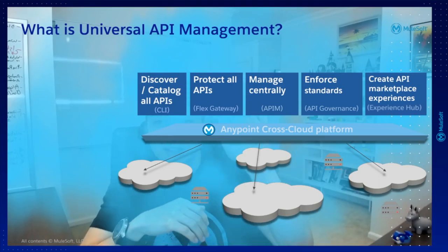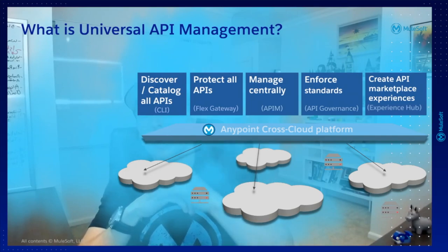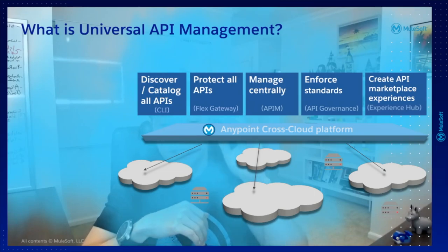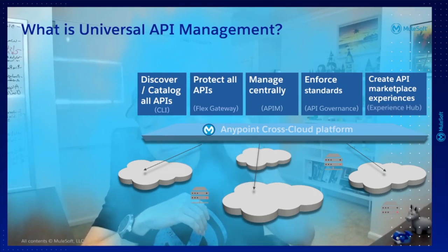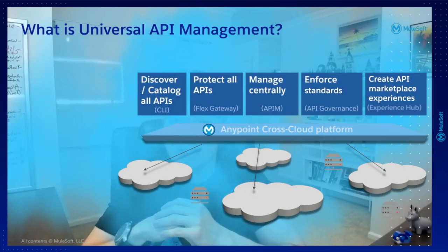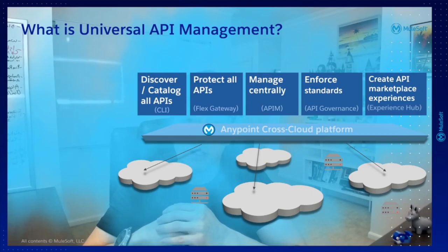So the next step is basically using FlexGateway to protect all APIs — to provide the right level of policy so that we can protect those APIs, protect the backend systems that are behind these APIs, and provide the right access to any of these APIs, regardless of what technology they use or where they are running.